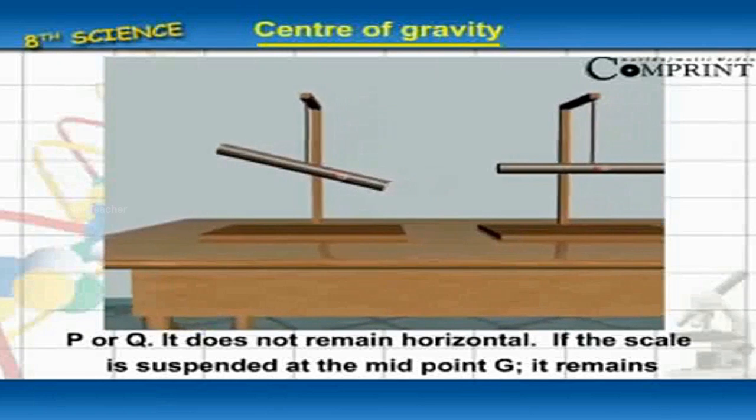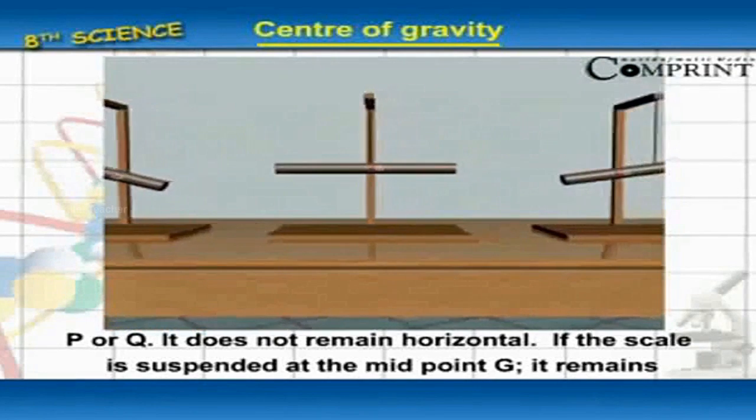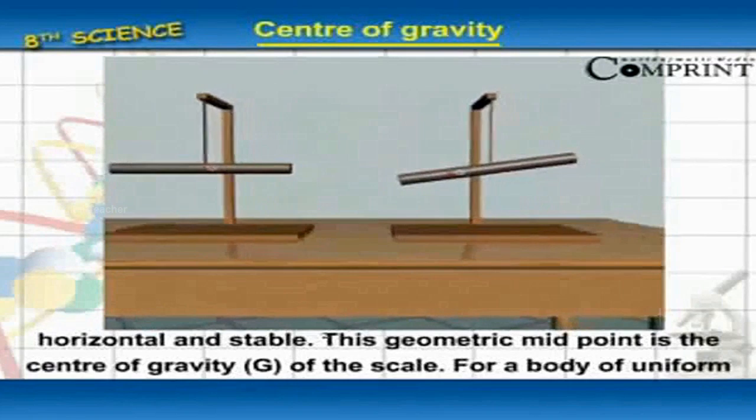it does not remain horizontal. If the scale is suspended at midpoint G, it remains horizontal and stable.